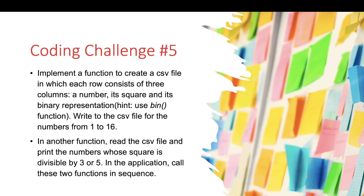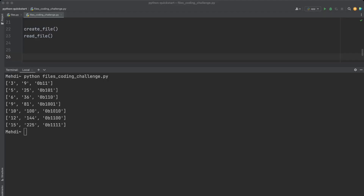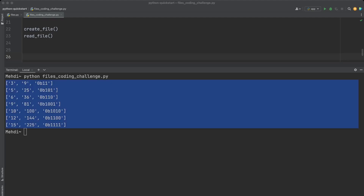Now that we covered how to work with files, it is time for a coding challenge. You need to implement a function to create a CSV file where each row consists of three columns: a number, its square, and its binary representation — for numbers from 1 to 16. In another function, read the CSV file and print the numbers whose square is divisible by three or five. Call these two functions in sequence. Please pause here and spend five to ten minutes to implement this challenge.